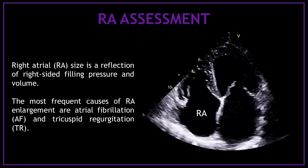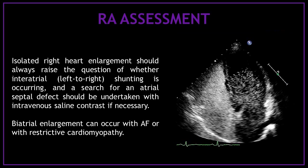The right atrial size is a reflection of right-sided filling pressure and volume. The most frequent causes of right atrial enlargement are atrial fibrillation and tricuspid regurgitation. Isolated right heart enlargement should always raise the question of whether interatrial shunting is occurring, and a search for an atrial septal defect should be undertaken with intravenous silent contrast if necessary. Bi-atrial enlargement can occur with atrial fibrillation or with restrictive cardiomyopathy.